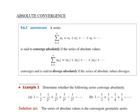First, we define absolute convergence. A series sigma k=1 to infinity of u_k, equal to u1 + u2 + ... + u_k + ..., is said to converge absolutely if the series of absolute values — sigma k=1 to infinity of |u_k| = |u1| + |u2| + ... + |u_k| + ... — converges, and is said to diverge absolutely if the series of absolute values diverges. We will go through some examples applying this concept.